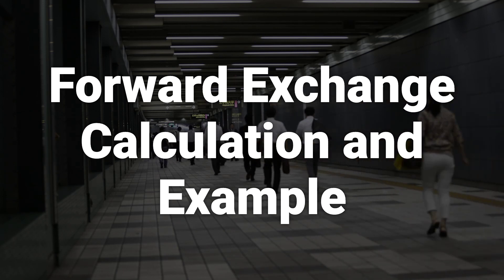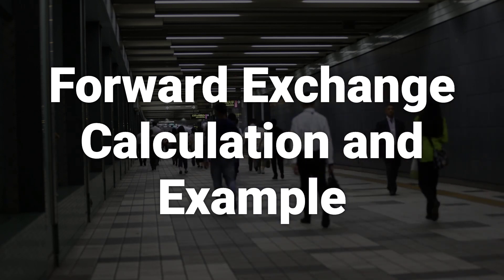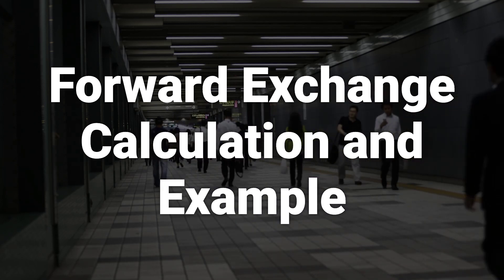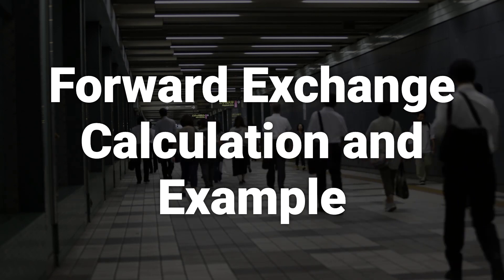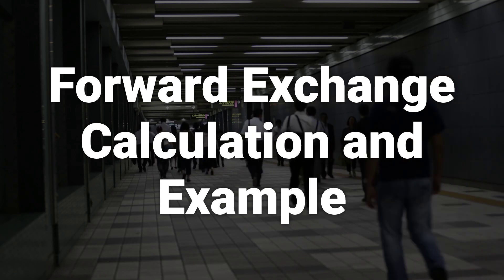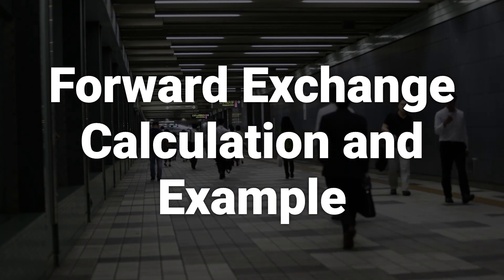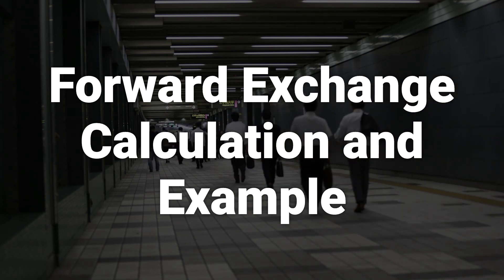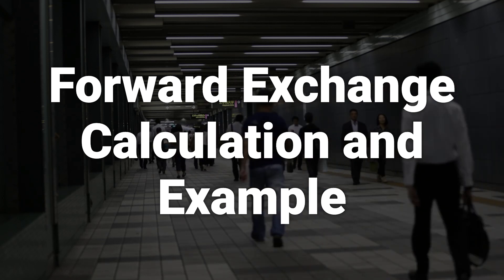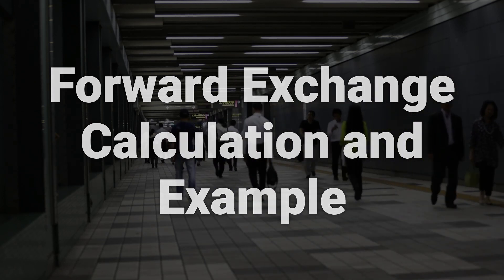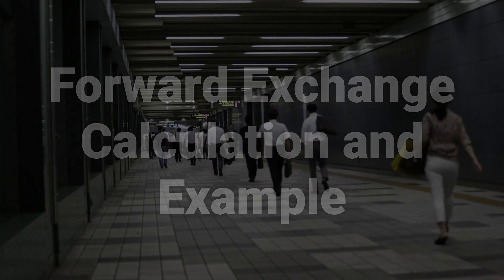For example, assume that the U.S. dollar (USD) and Canadian dollar (CAD) spot rate is 1 CAD = 0.80 USD. The U.S. three-month rate is 0.75 percent, and the Canadian three-month rate is 0.25 percent. In this case, the three-month USD to CAD FEC rate would be calculated as: 0.80 multiplied by (1 + 0.0075) / (1 + 0.0025), which equals 0.8001 dollars.